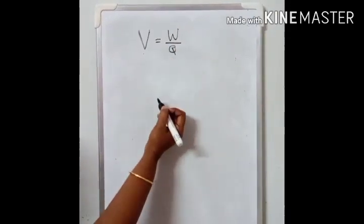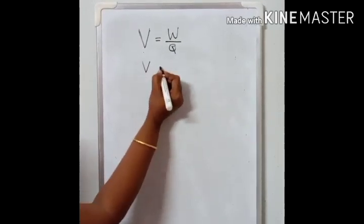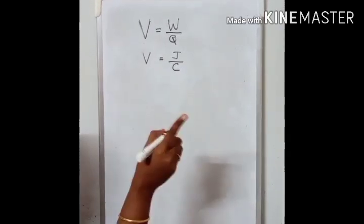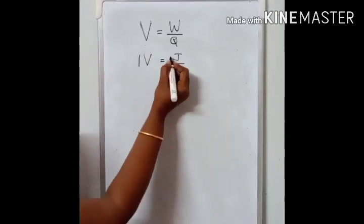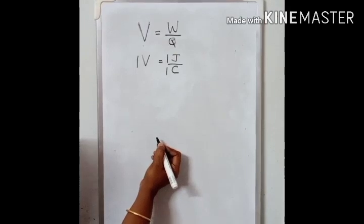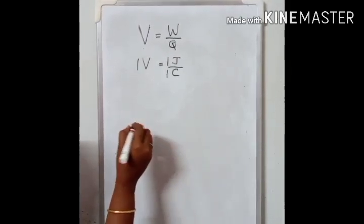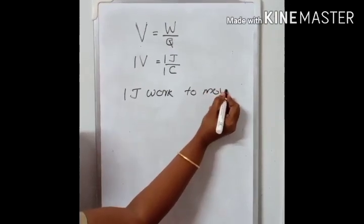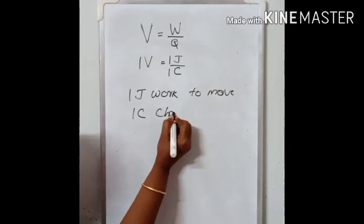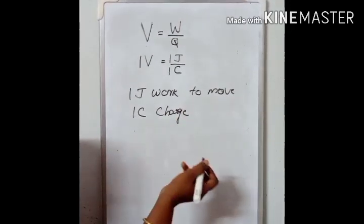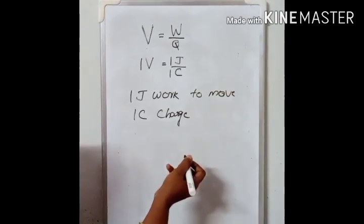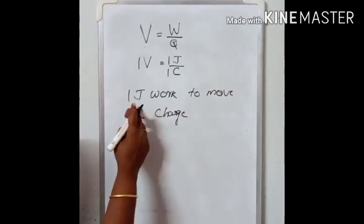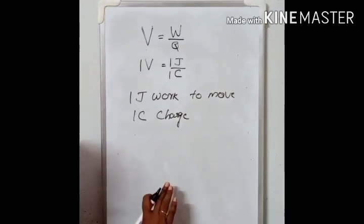Potential difference is equal to work done divided by charge. SI unit of potential difference is volt. SI unit of work done is joule. Charge is coulomb. So how will you define one volt? One volt is equal to one joule by one coulomb. That means if one joule of work is done to move one coulomb of charge from one point to another point in a conductor, then the potential difference is one volt. So one volt is the potential difference created if one joule of work is done to move one coulomb of charge from one point to another point.